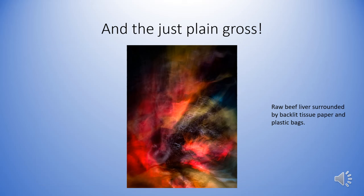And then there are just the plain gross images. On ICM Artists on Facebook we were having fun talking about unusual things we'd photographed, and somebody commented that I had not yet taken anything of a raw liver — and that got me thinking. So I went out to the store, bought a pound and a half of raw beef liver, surrounded it with tissue paper and plastic bags, then backlit the whole thing and side-lit it a little bit. This is what came out — it was a lot of fun, but kind of gross, and definitely something I'm not going to repeat.